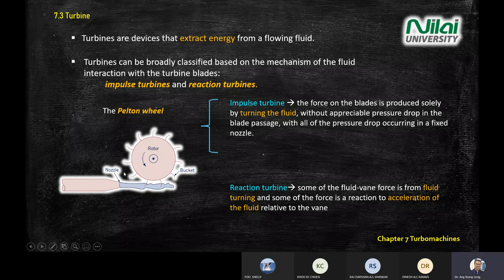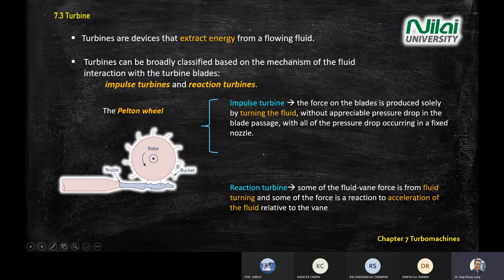This is a bit different from the pump or fan that we learned previously. A turbine basically extracts energy that is imposed on it from the fluid itself. The turbine turns because of the energy it extracts from the fluid, as you can see from the diagram — it turns as the water hits the impeller.